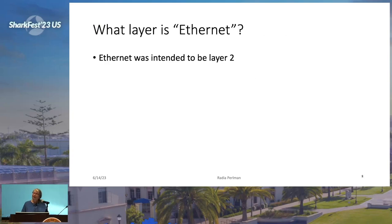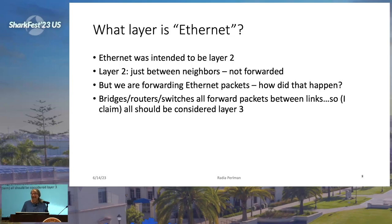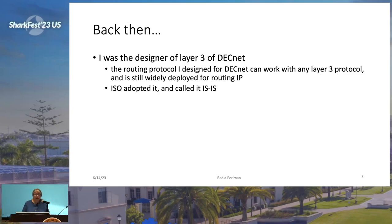Layer three is the thing with components you can call switches, routers, or bridges — it forwards packets from link to link to find a path across the network to the destination. So what layer is Ethernet? Ethernet was intended to be layer two, where everybody was on the same wire. But we're forwarding Ethernet packets — how did that happen? It wasn't designed to do that. These boxes that forward things between links should all be considered layer three, because that's what layer three does.